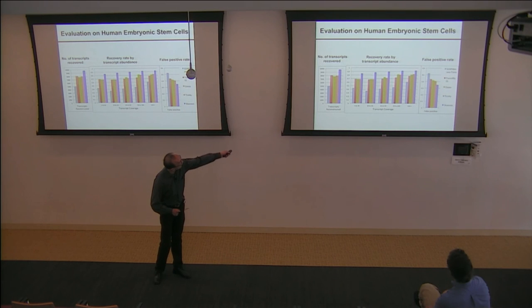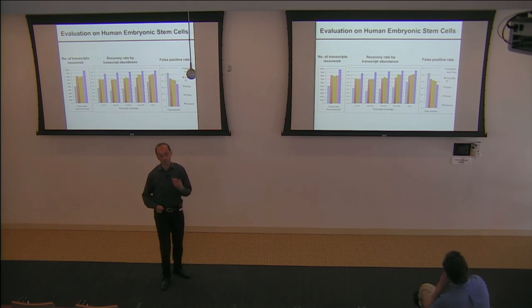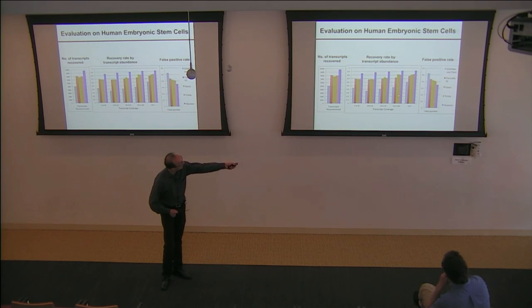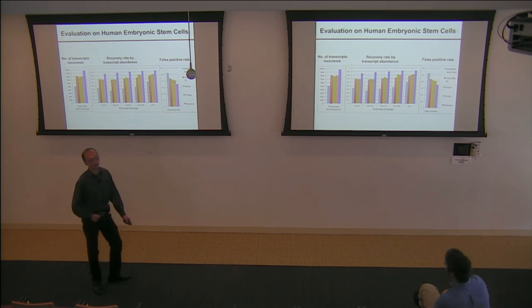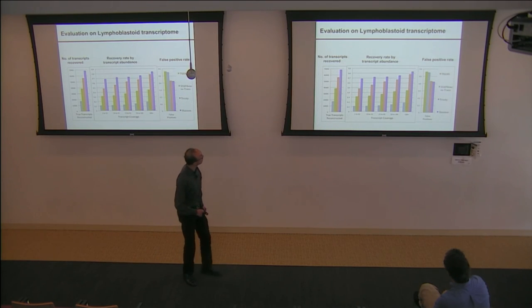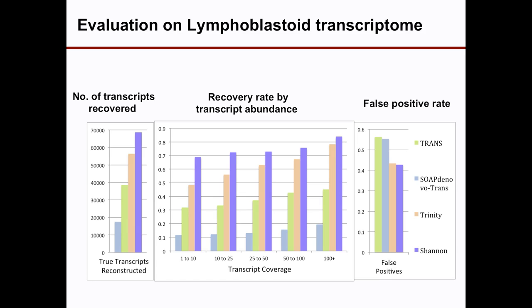Both datasets also have PacBio long reads, which we used to create a pseudo-ground truth reference transcriptome — but we only use the short reads for assembly in our comparison. Shannon is shown in blue, compared against SOAPdenovo-Trans, Trans-ABySS, Oasis, and Trinity. Shannon shows consistently better recovery rate across different transcript abundances and coverage levels, with the lowest false positive rate. Similar results hold for the lymphoblastoid transcriptome, where Oasis did not run on this paired-end dataset.